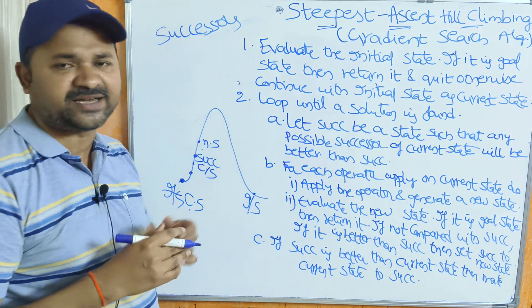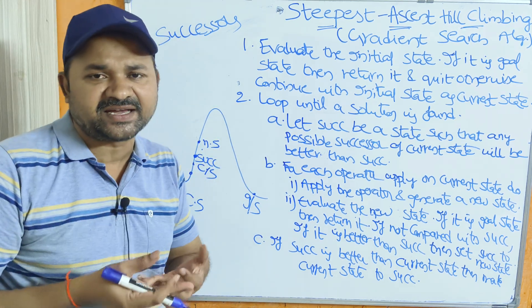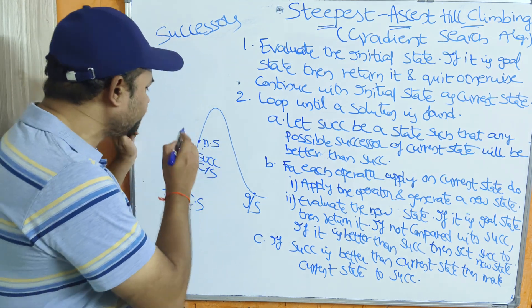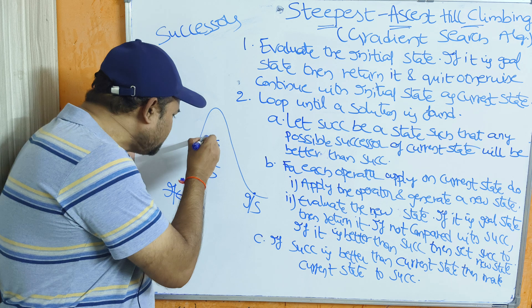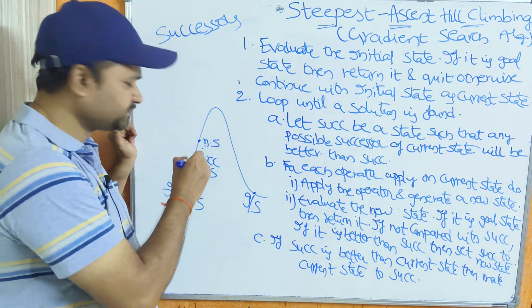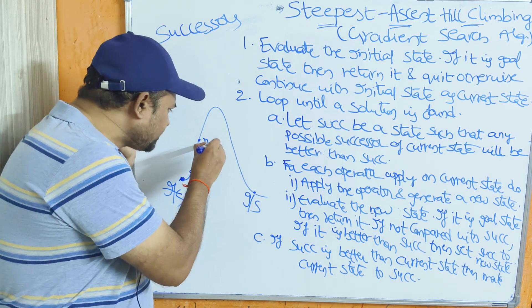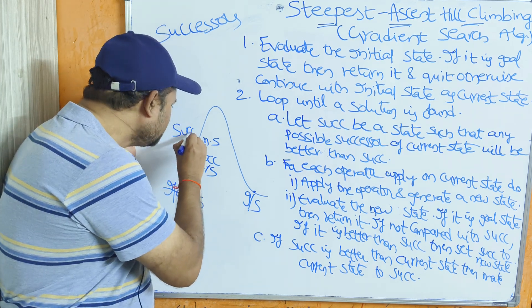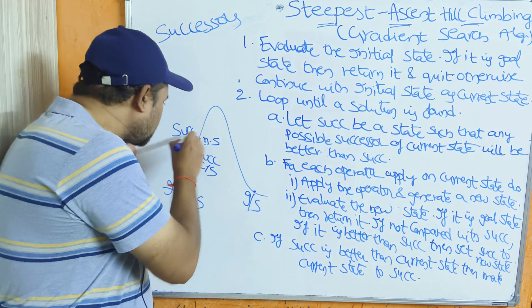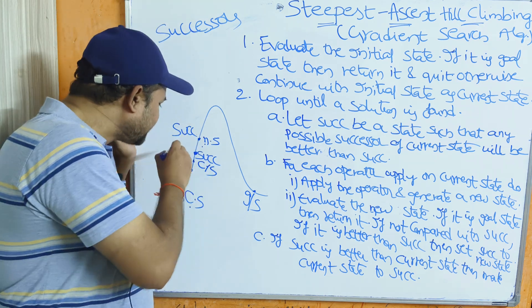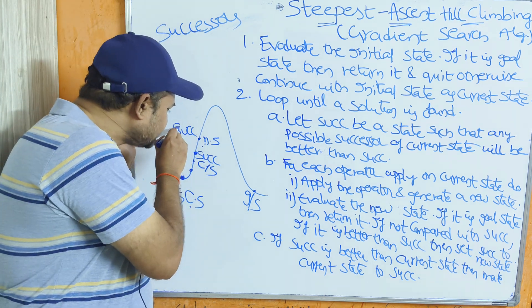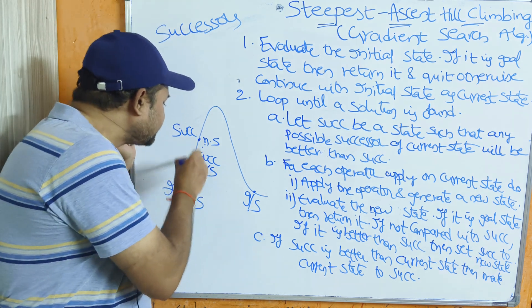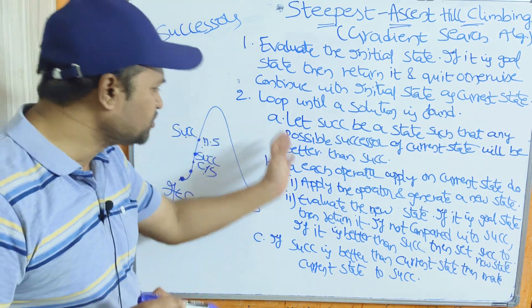Evaluate this new state. If this new state is a goal state, then quit and return it. If this new state is not a goal state, then compare this new state with the successor. If the new state is better than the successor, then make the successor equal to the new state — so the successor is now updated to the new state.